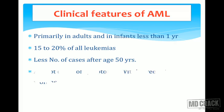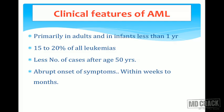AML is very common. ALL has a peak incidence at 4 to 10 years of age, with the fourth year being the peak. AML has two peaks — one in infants and one in adults — but is very uncommon after 50 years of age.